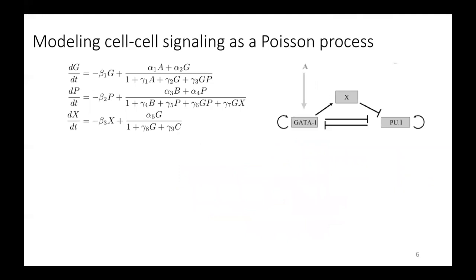Next, we needed to determine how to incorporate signaling into the model. And so for simplicity and interpretability, we decided to only change one parameter, this external environment parameter A, which impacts the expression of this gene GATA1.